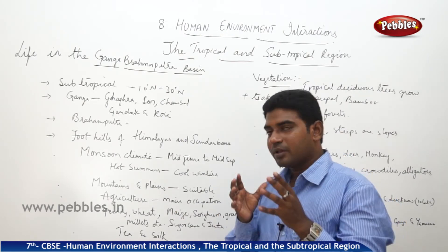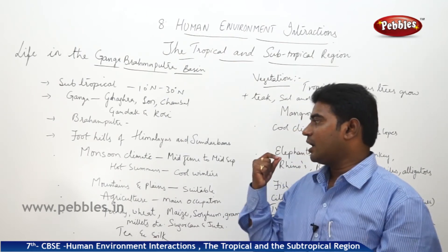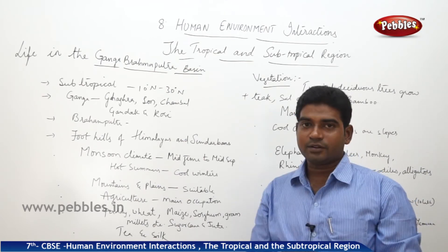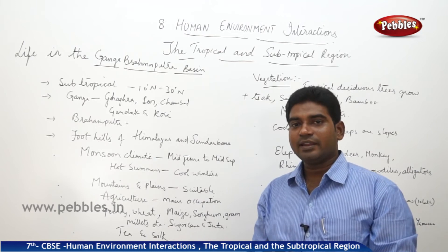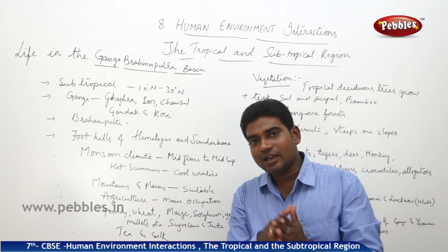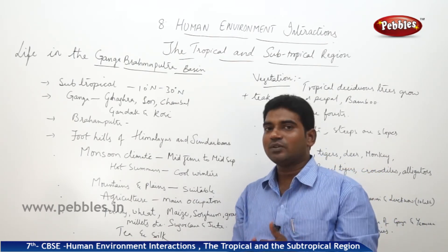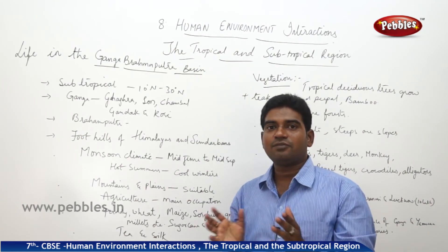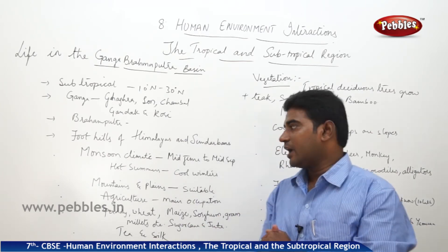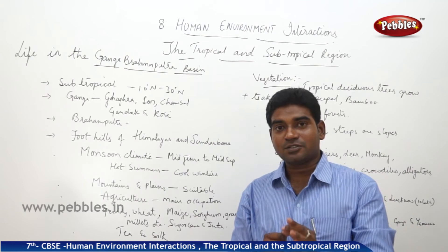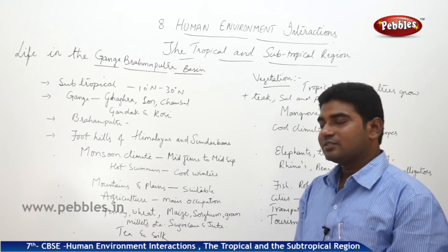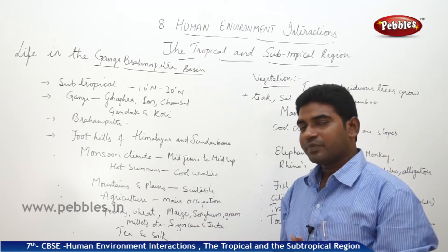The climate here is a monsoon type — from mid-June to mid-September we have monsoon rains, and at other times we have hot summers and cool winters, giving three seasons: rainy, winter, and summer. The Ganga-Brahmaputra basin has both mountain and plain regions. Mountains are very difficult for common people to access due to the high ranges, while the plains are very suitable and best for agriculture as they are extremely fertile. Agriculture is the main occupation of the people who live here.